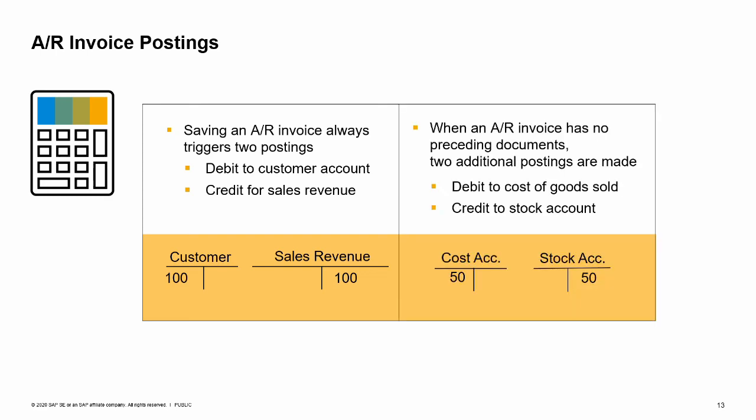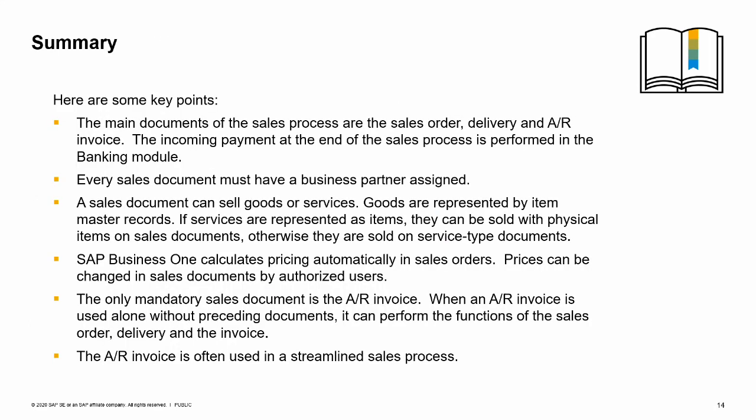The main documents of the sales process are the sales order, delivery, and AR invoice. The incoming payment at the end of the sales process is performed in the banking module. Every sales document must have a business partner assigned. A sales document can sell goods or services — goods are represented by item master records. If services are represented as items, they can be sold with physical items on sales documents; otherwise they are sold on service type sales documents. SAP Business One calculates pricing automatically in the sales order, and prices can be changed by authorized users. The only mandatory sales document is the AR invoice. When used alone without any preceding documents, the AR invoice can perform the functions of the sales order, delivery, and invoice — this is why it is often used in a streamlined sales process.